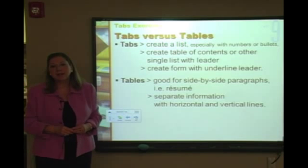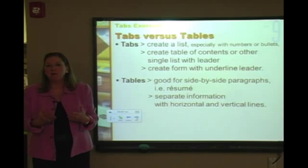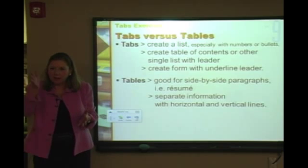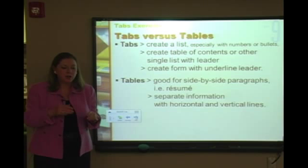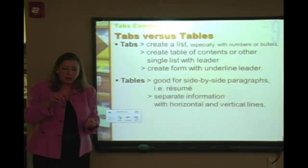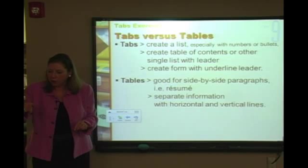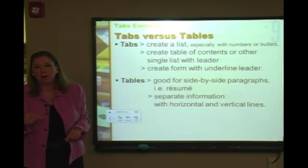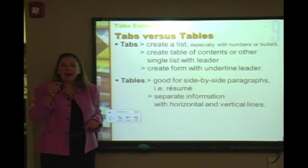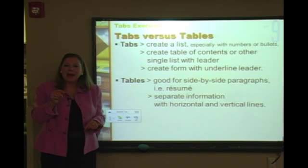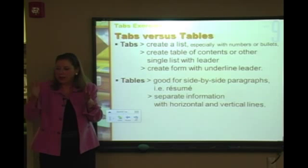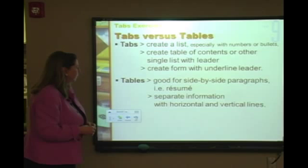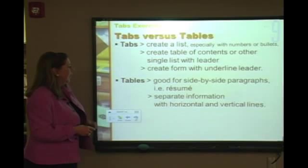Tabs are really the only way to create an actual form where everything lines up correctly. If you've ever tried using the underscore key — holding Shift and hitting it repeatedly — things never align at the end. That goes back to proportional type: you don't know what that proportion is, so it ends up different every time.